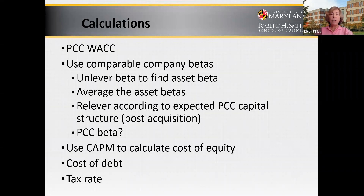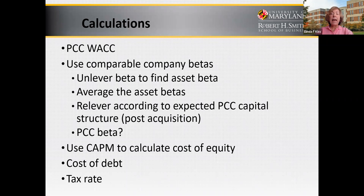Typically for the weighted average cost of capital, we want to use market value weights. Use interest-bearing debt — typically long-term debt — to get total financing. Then calculate the debt-to-equity ratio for each of those companies, using the D/E ratio to unlever beta using the Hamada equation: levered beta equals unlevered beta multiplied by one plus the debt-to-equity ratio multiplied by one minus the tax rate. You have done this earlier in this course.